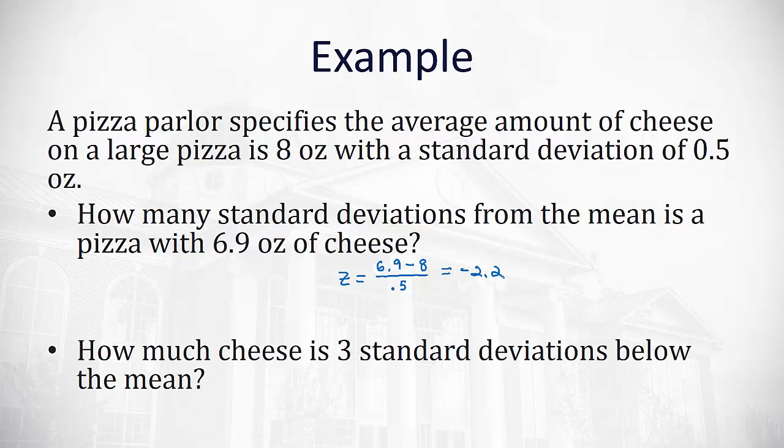What if I have a cheese pizza that's three standard deviations below the mean? How much cheese is that? Well now we're looking for the x value that has context in our situation. x equals the number of standard deviations, 3, and we're below the mean so it's negative, times the standard deviation which is 0.5, plus the mean which is 8. And when we do that in our calculator, we end up with 6.5 ounces of cheese being three standard deviations below the mean.